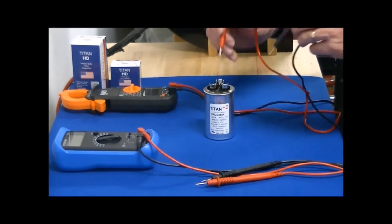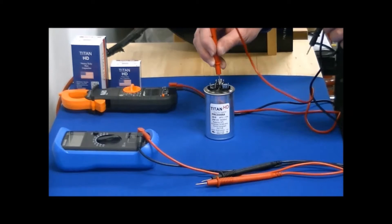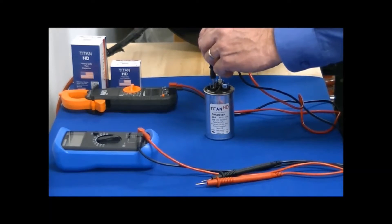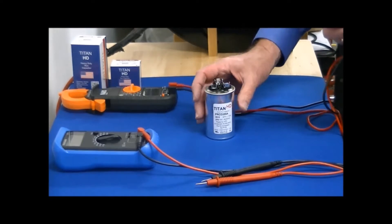Then do the same thing for the fan side. One probe on common, one probe on fan. That will give us the microfarad reading for the fan side, which is 5.07 microfarads. Both are well within tolerance.